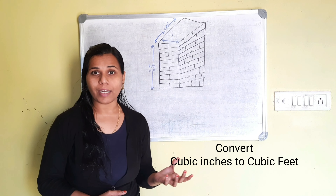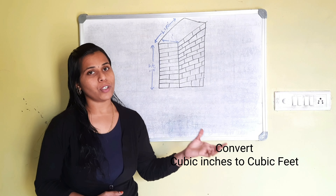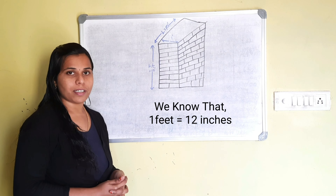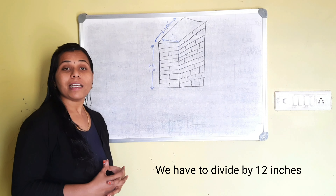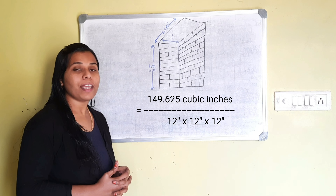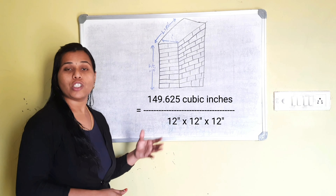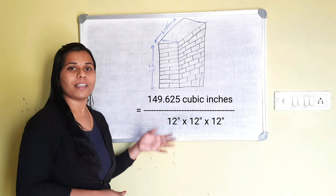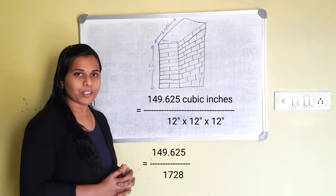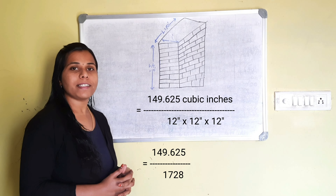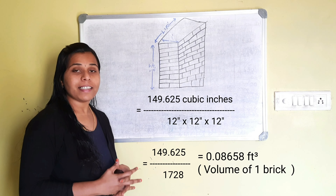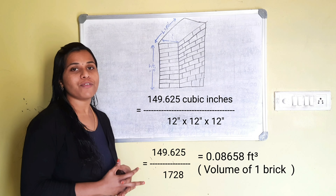Now we have to convert cubic inches to cubic feet. We know that 1 foot is equal to 12 inches, so we divide by 12 x 12 x 12. That is 149.625 divided by 1728, which equals 0.08658 cubic feet.